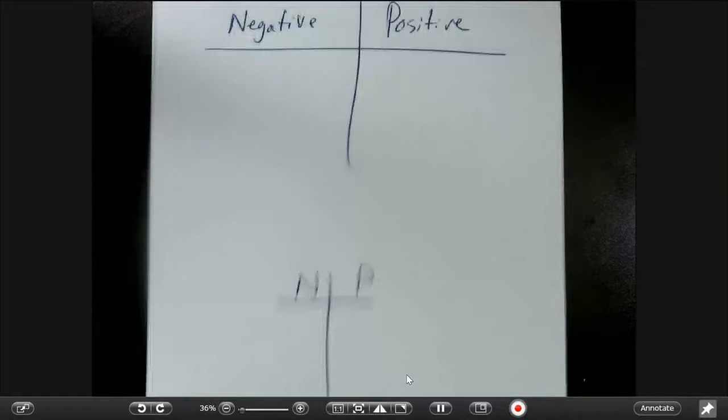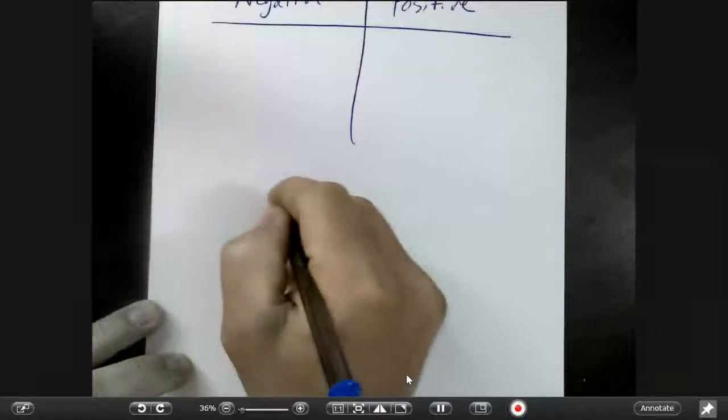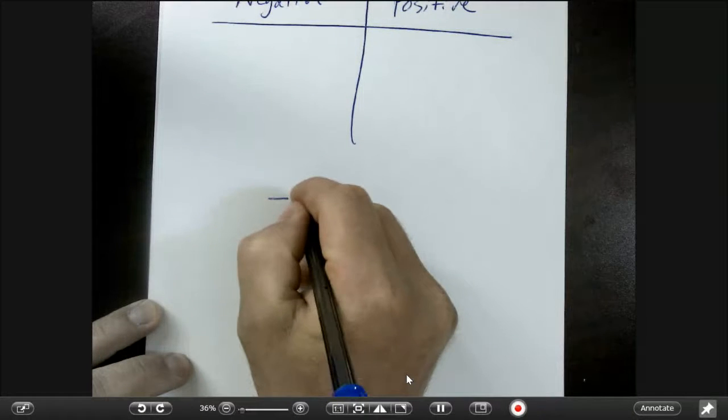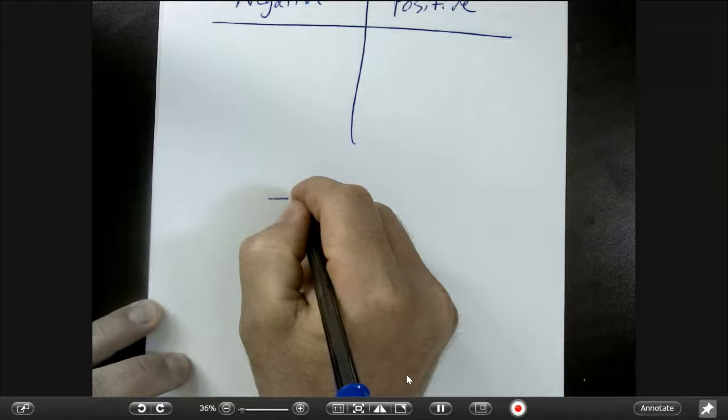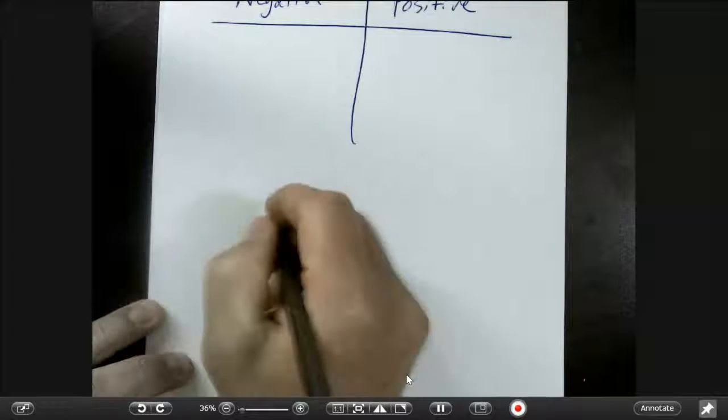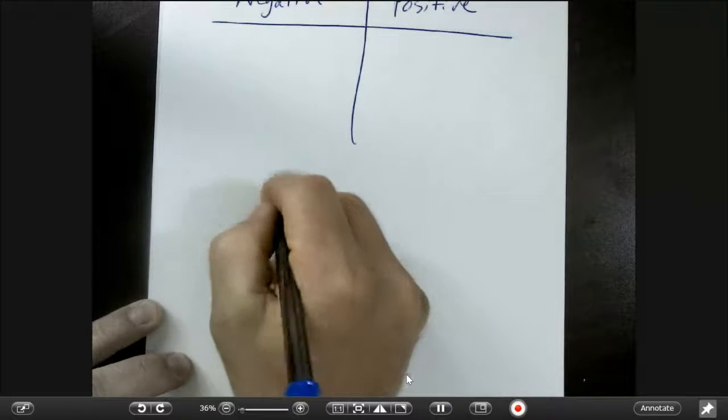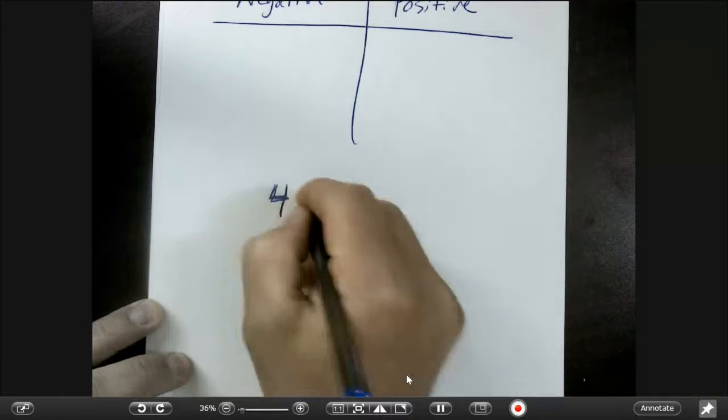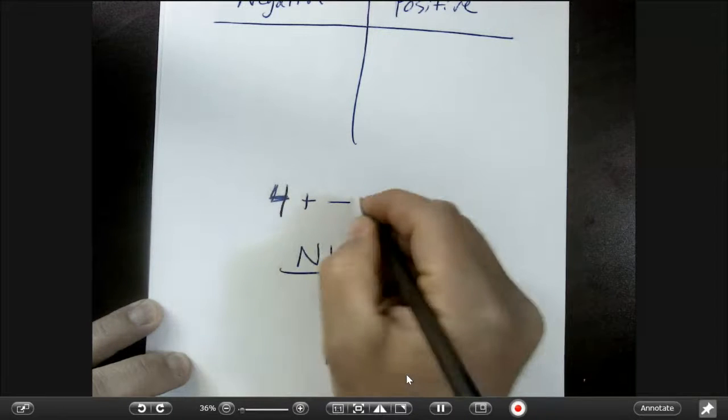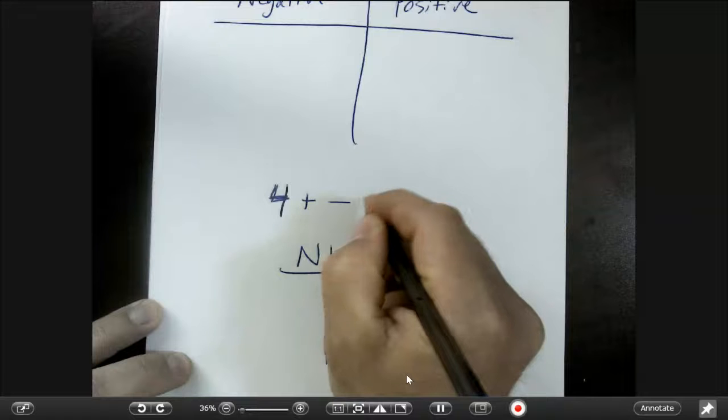So to do an NP chart, if you had the problem, let's say you have 4 plus negative 9.